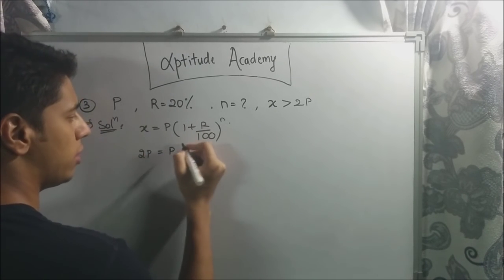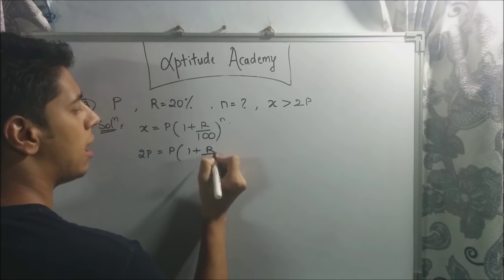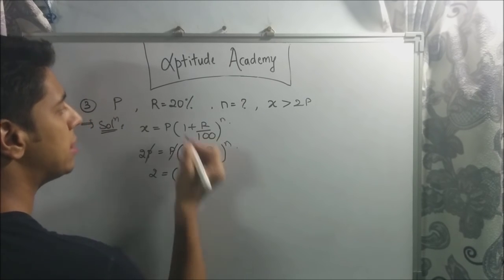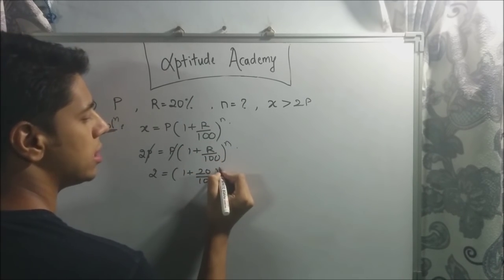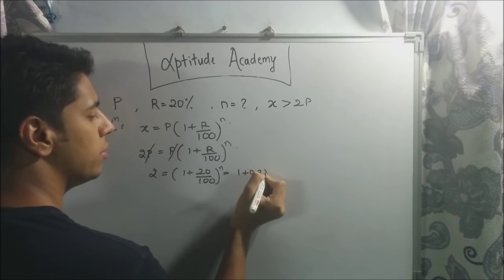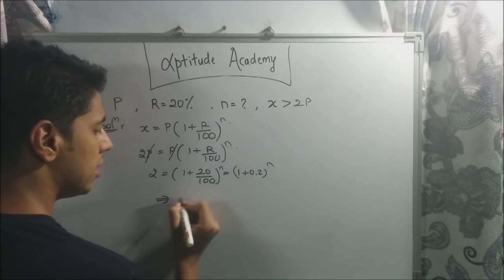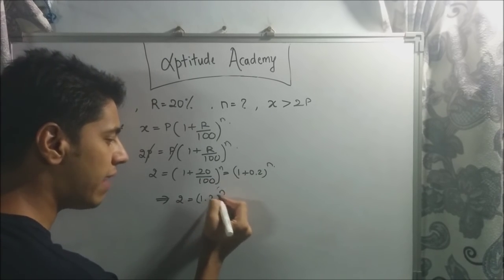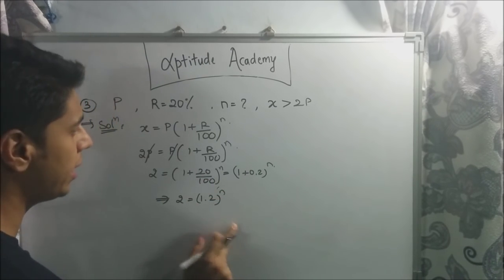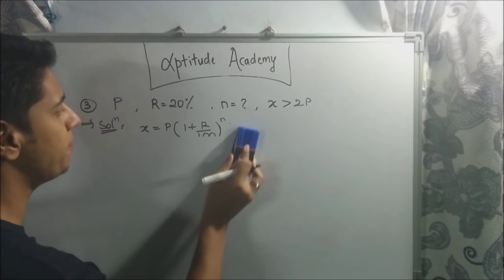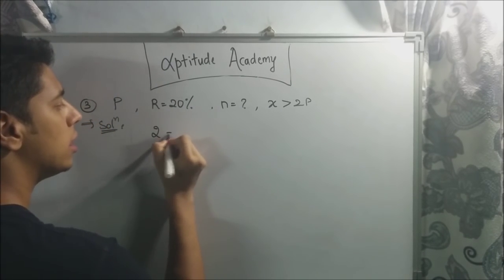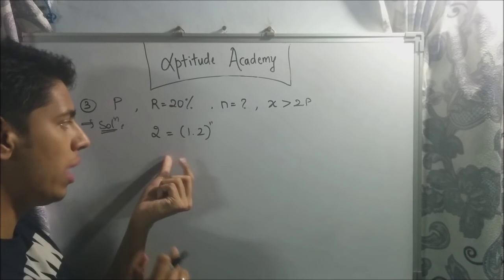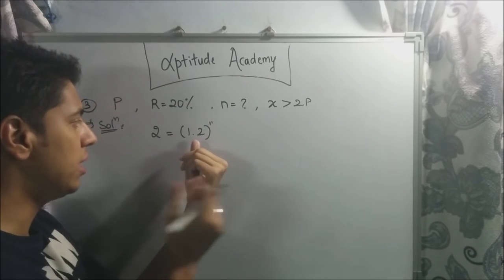Using A = P × (1 + R/100)^N, set A = 2P. The P's cancel, giving 2 = (1 + 20/100)^N = (1.2)^N. We need to find N such that 1.2^N > 2. Now I'll erase and rewrite because there's something very important to note here — this is where most students make a mistake.